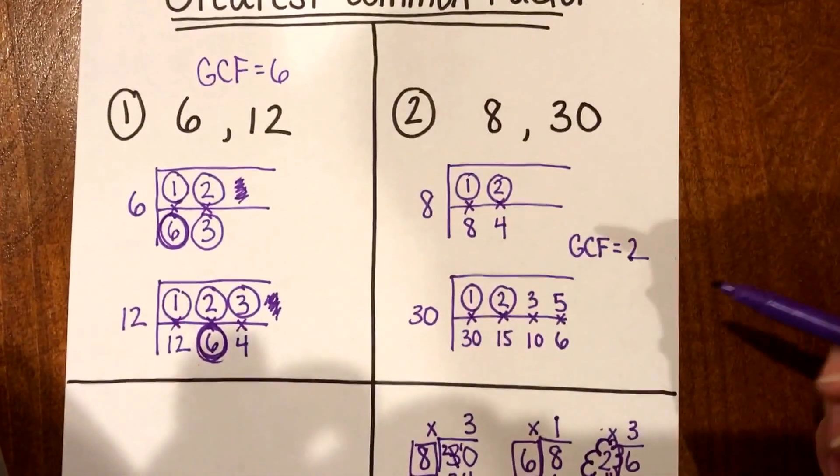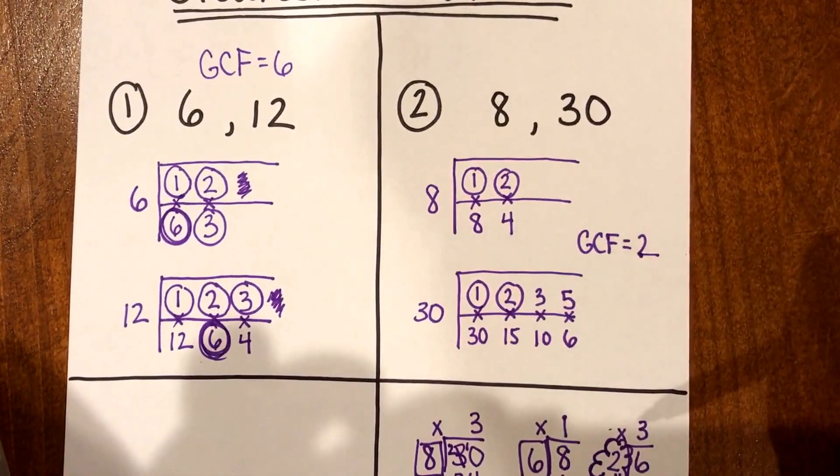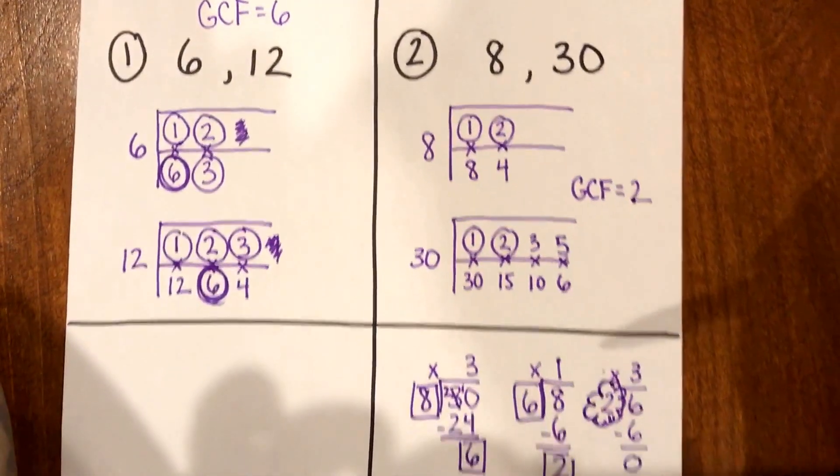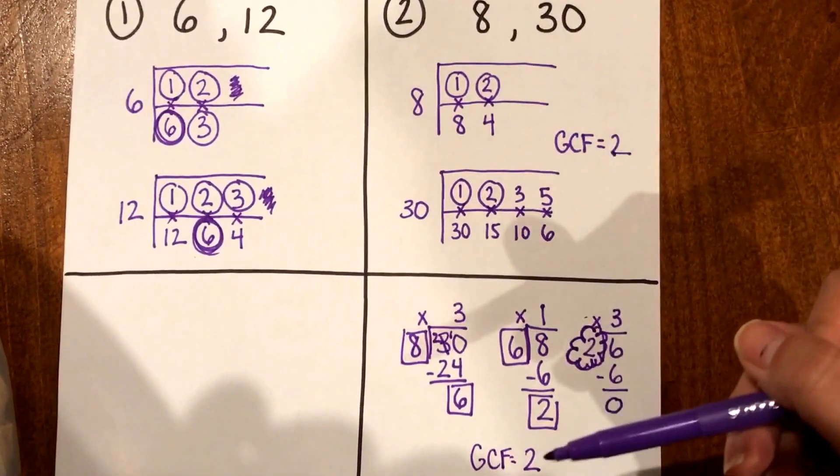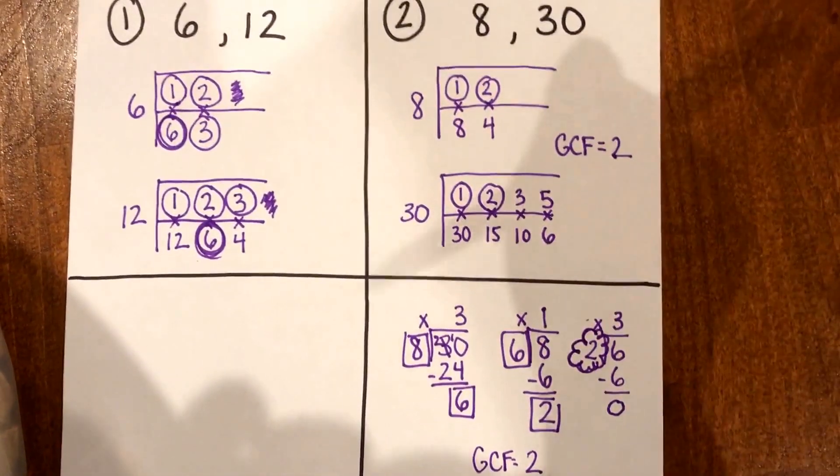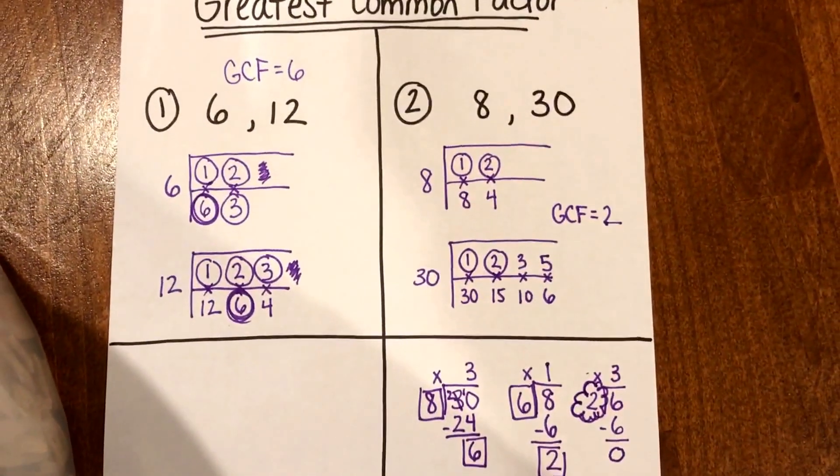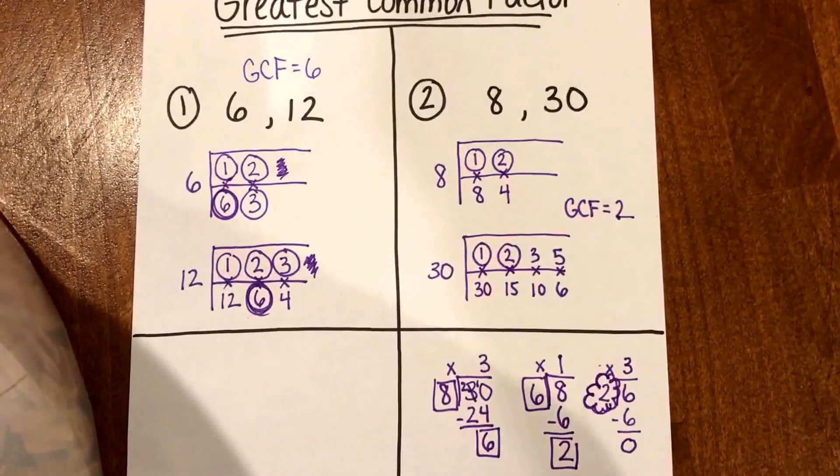Now if I go back and check at the top where I did my F method, that method also had my greatest common factor as 2. So as you can see either method you choose both is going to give you the same answer. So in this video I showed you how to find the greatest common factor using the Euclidean algorithm or the dividing method.